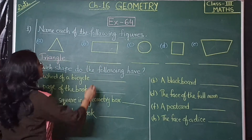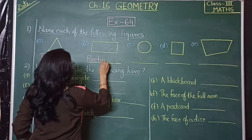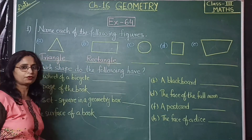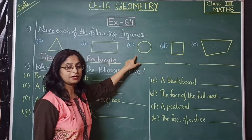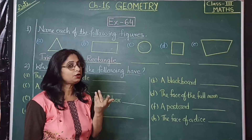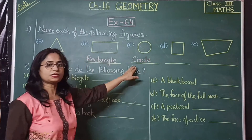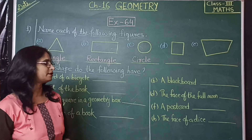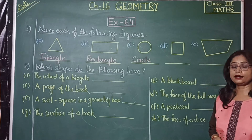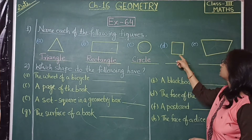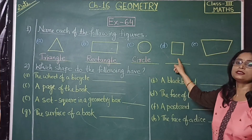So it is called a rectangle. The spelling is R-E-C-T-A-N-G-L-E. Now which shape is this? It is a circle. A circle has no corners and no sides. And a square has four sides and four corners and all sides are equal.